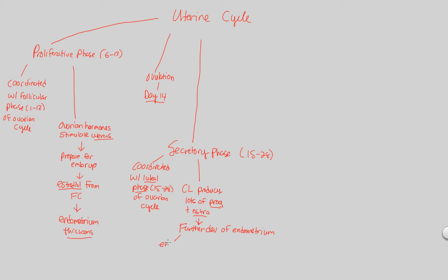More specifically, the arteries of the endometrium are getting enlarged — the enlargement of the endometrial arteries. The purpose of this is increased blood flow. More blood flow means more nutrients, and those nutrients are for the possible implanted embryo. The possible implanted zygote needs tons and tons of nutrients, which are going to be delivered via blood flow, and blood flow can only happen via vascularization as the arteries are forming.